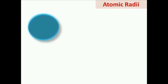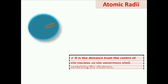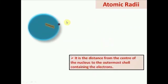The first periodic property is Atomic Radius. Atomic Radius is the distance from the center of the nucleus to the outermost shell containing an electron.